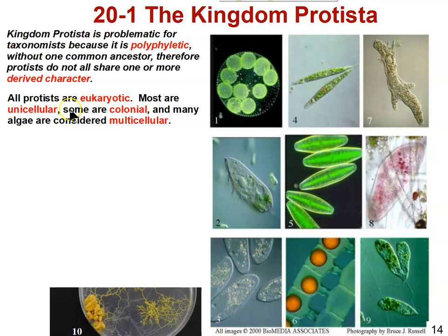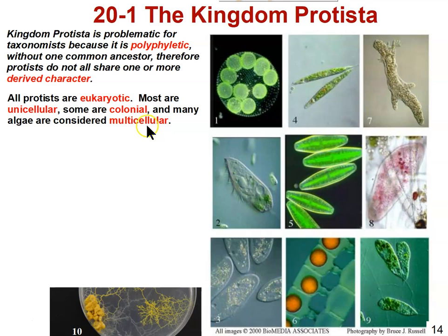To confuse things more, in the Kingdom Protista they can be either unicellular — and most of them are — but some of them are also colonial, which is a number of very similar cells living together, not highly specialized. A multicellular organism, by definition, has at least a handful of specialized cells carrying out specialized functions. Some protists are truly multicellular; some of the algae are considered truly multicellular.